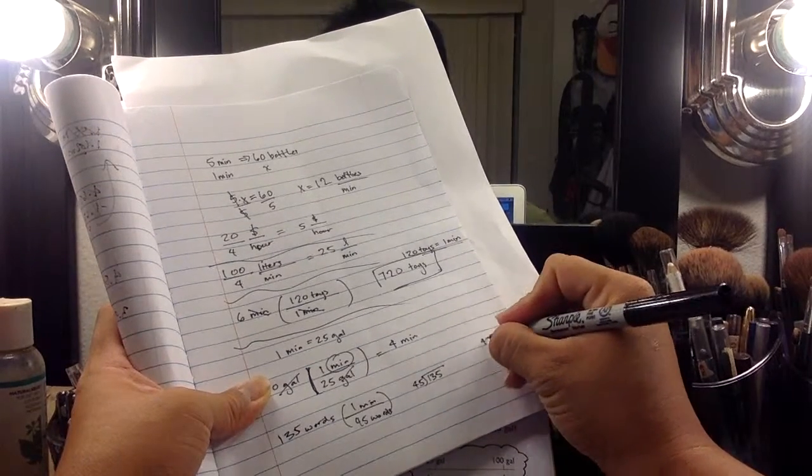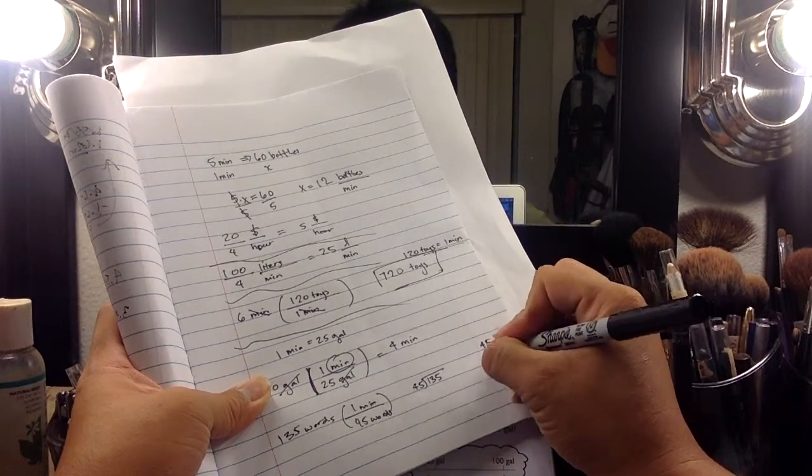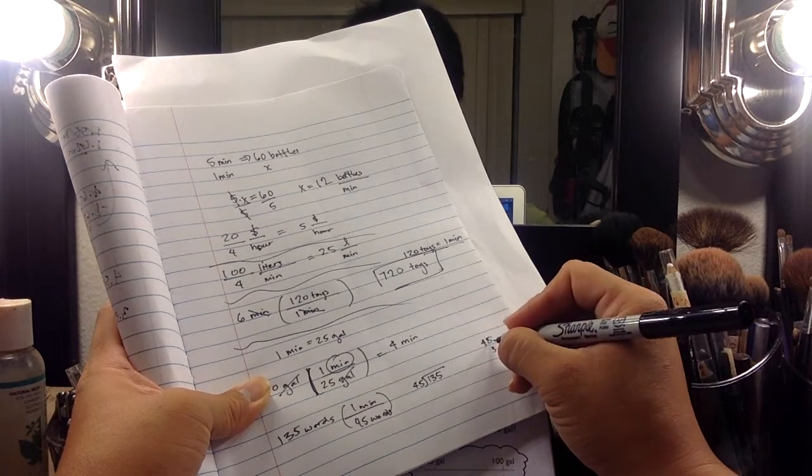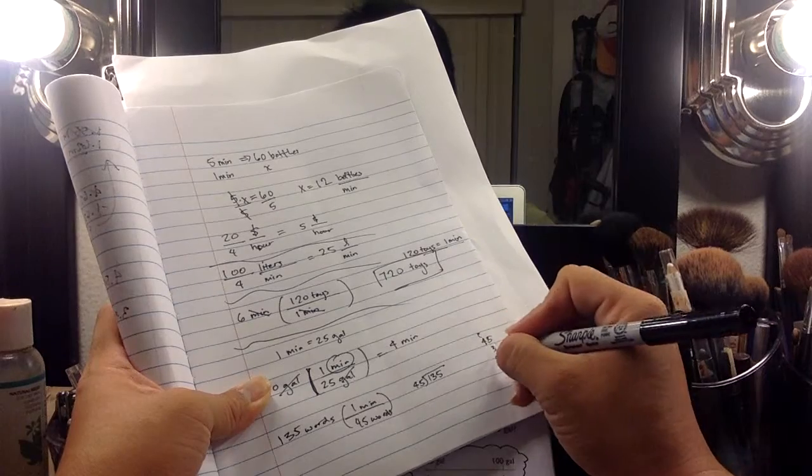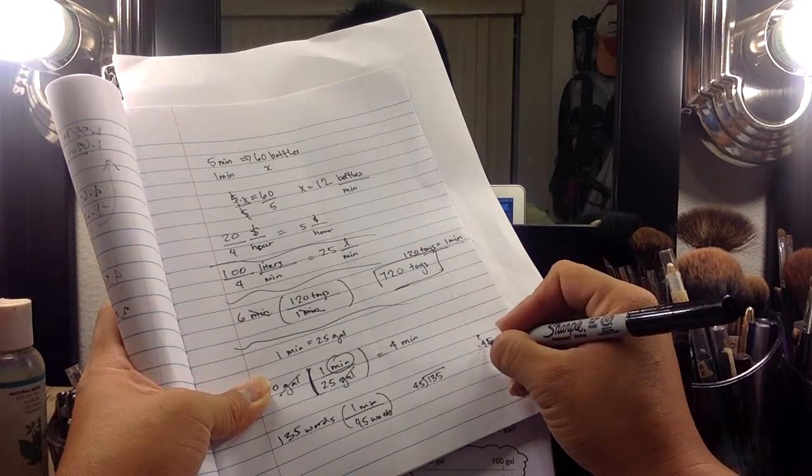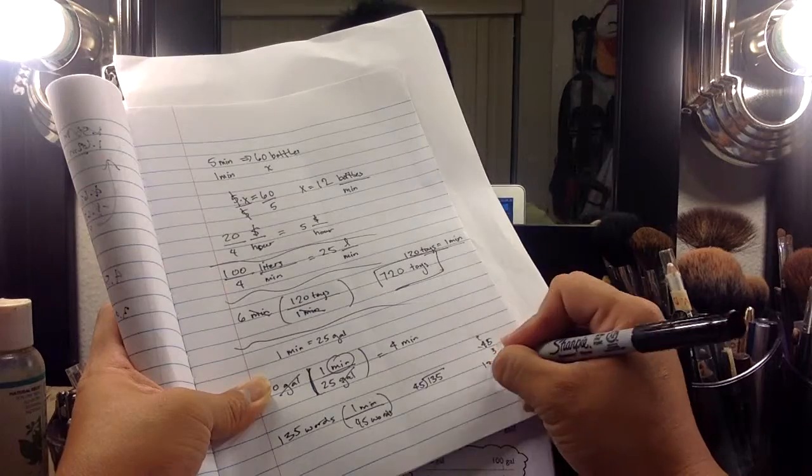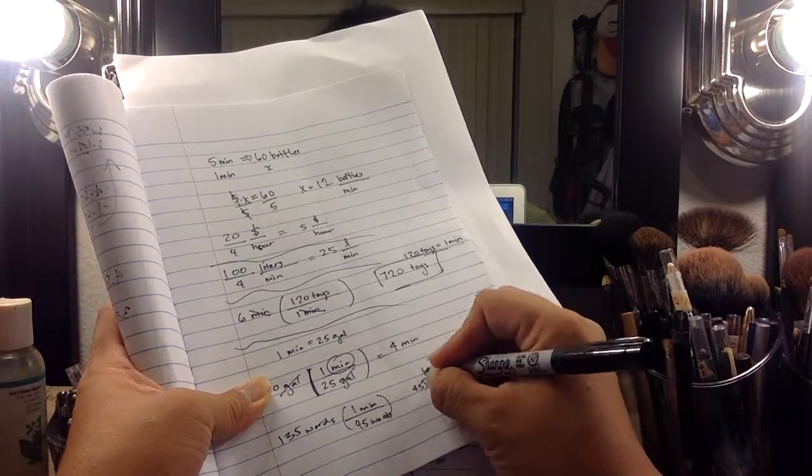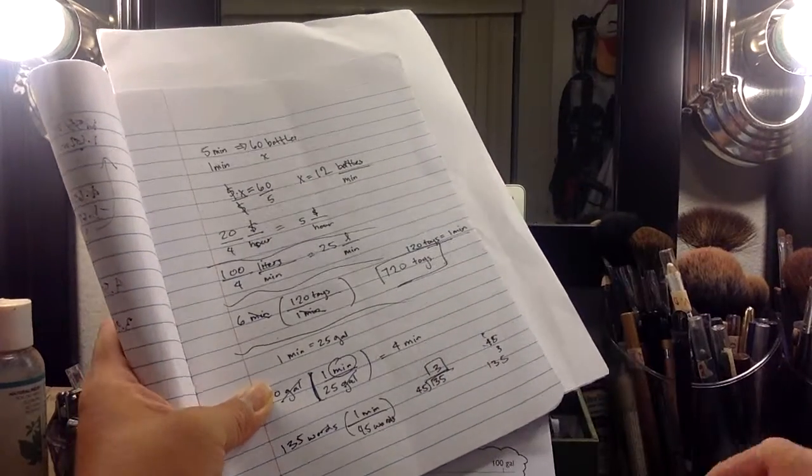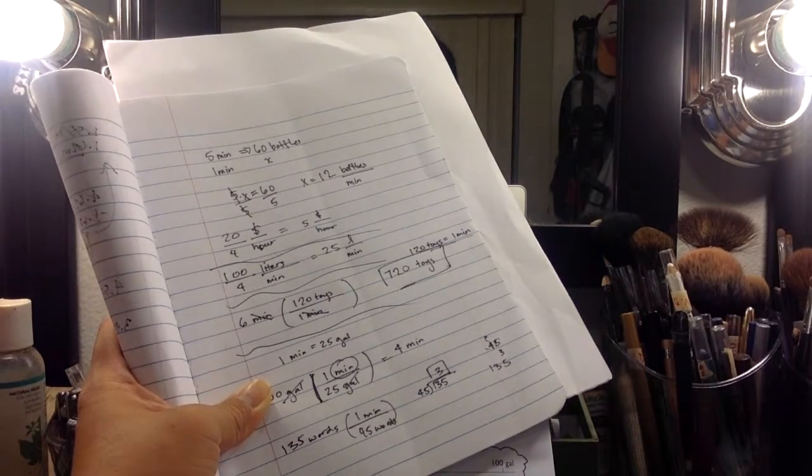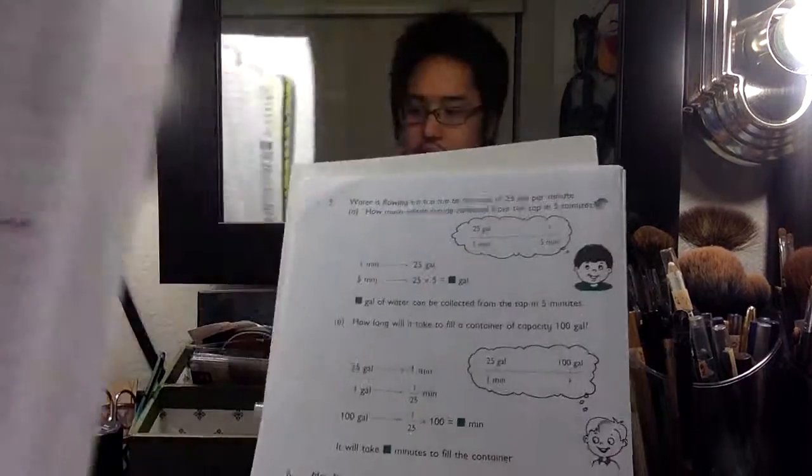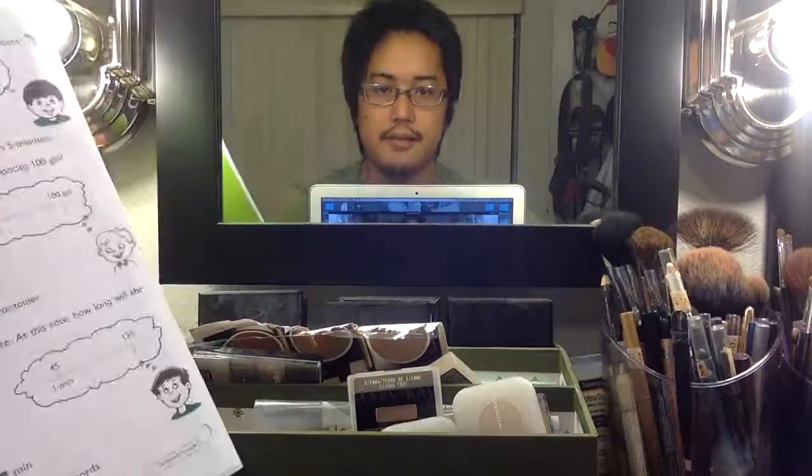quick. What is 45 times 3? 45 times 3, let's see, that's 5 and a 1 here, 4 times 3 is 12 plus 1, that's 13. Oh cool, answer is 3. So it's going to take 3 solid minutes to type up 135 words. All right, that's done.